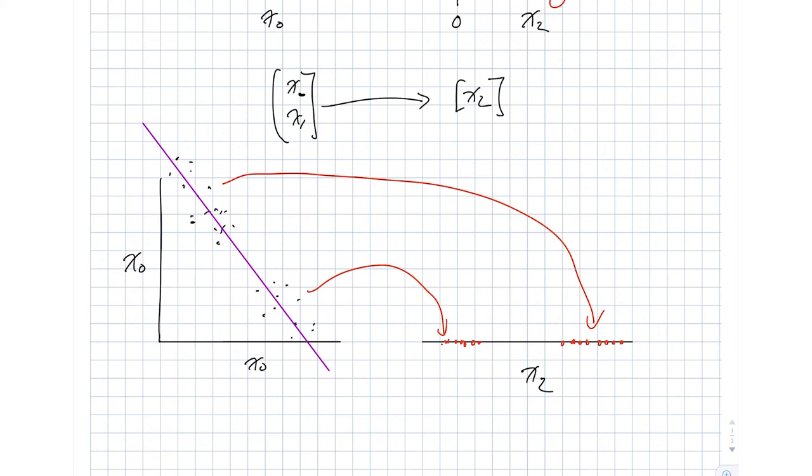So in this compressed representation, we are actually preserving some important aspects of the topology, and in particular, the fact that there's that gap in between.